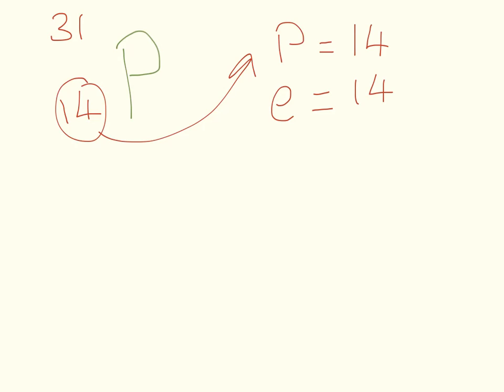This is phosphorus. Its mass number is 31. Its atomic number is 14. So again, the atomic number tells us the number of protons, which is equal to 14. The number of electrons, which is equal to 14. And the number of neutrons is the mass minus the atomic. So it's 31 minus 14, which equals 17.